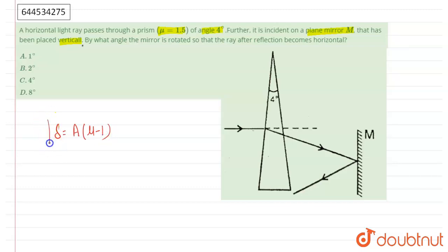A times mu minus 1, that is the deviation angle for the prism. Here A is the prism angle and mu is the refractive index of the prism. So deviation angle is equal to 4 degrees times 1.5 minus 1.